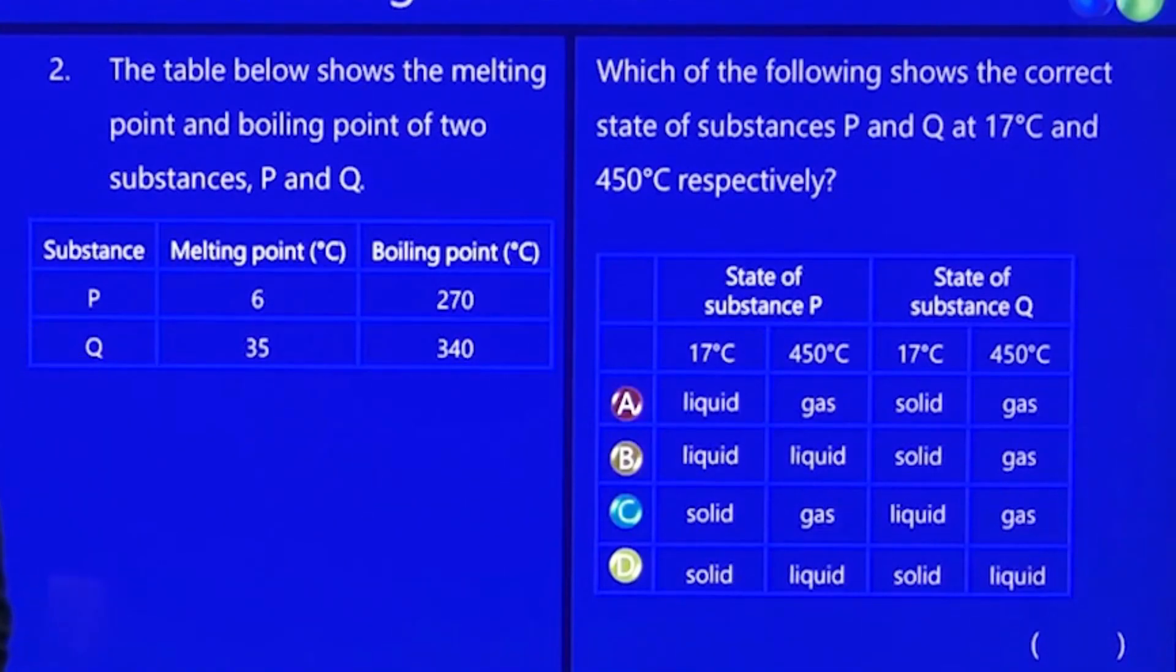Question 2. The table shows the melting point and boiling point of two substances P and Q. I'm going to show you a method that I use and you have to be familiar with this method so that you can get your answers very easily, very quickly, without error.